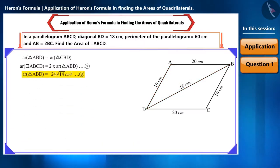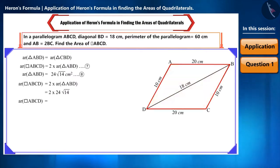And now we can substitute its value in this equation 7 to find the area of the parallelogram. We get the area of the parallelogram ABCD as 48 root 14 square cm.